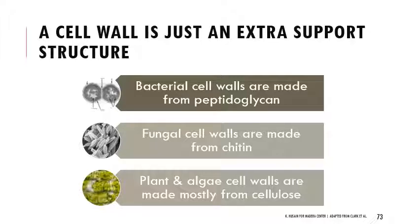I want to take a moment to clarify something about cell walls. A cell wall is just an extra support structure — it's a very general term. Bacteria have cell walls, fungi have cell walls, plants and algae have cell walls. But all of those cell walls are made up of different material. Bacterial cell walls are made up of peptidoglycan. Fungal cell walls are made up of chitin. Plant and algae cell walls are made mostly from cellulose. So even though they're all called cell walls, the way they're formed and the material they're formed from is completely different.